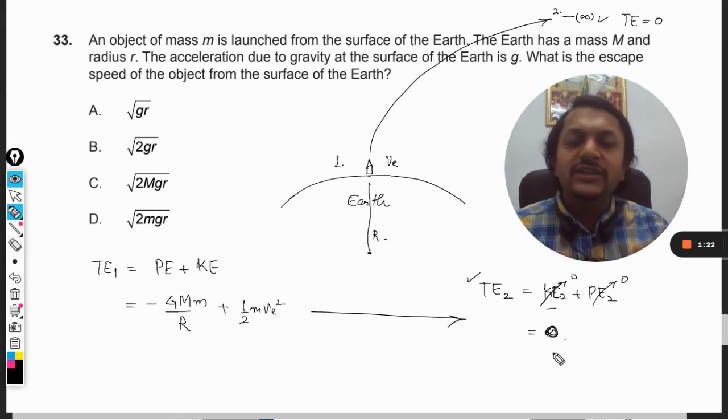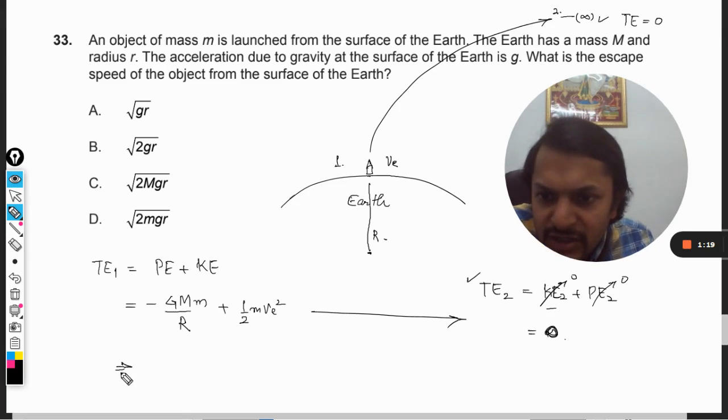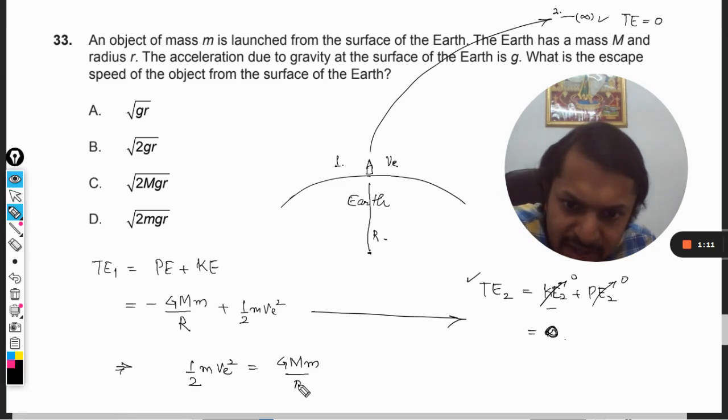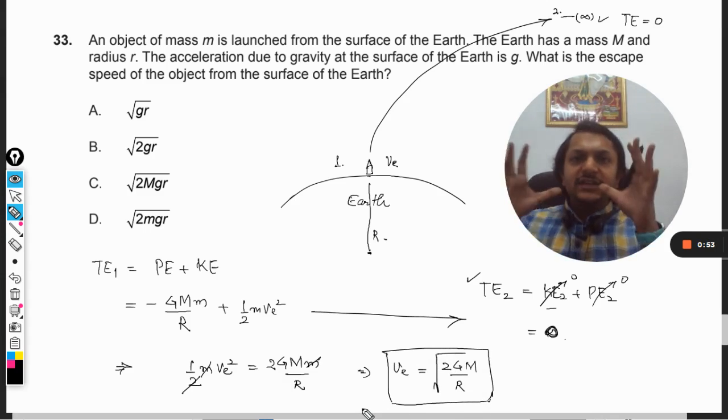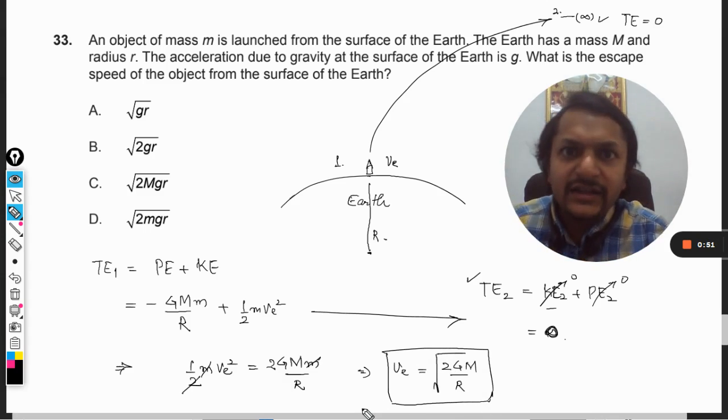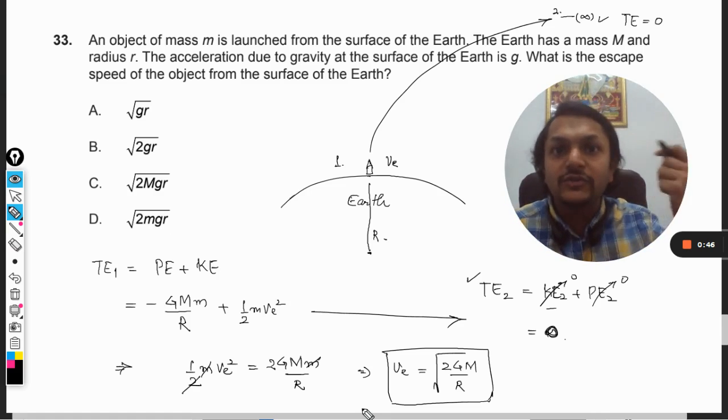So these energies should be equal to each other. From here we can say half M VE squared is equal to GMm by capital R. This M gets cancelled with this, the two will be cross multiplied, and so escape velocity is square root of 2GM divided by R. This is the expression for the escape speed that this body should be given so that the body will never come back again - it will go into space and never return.